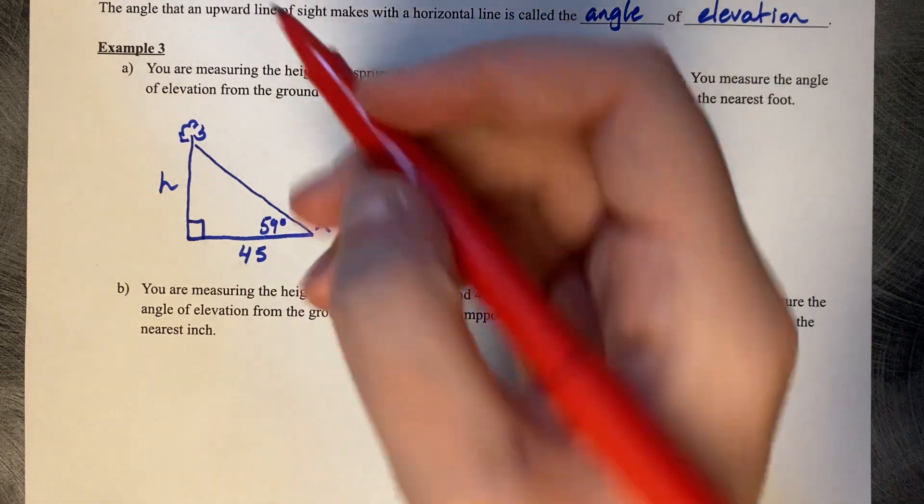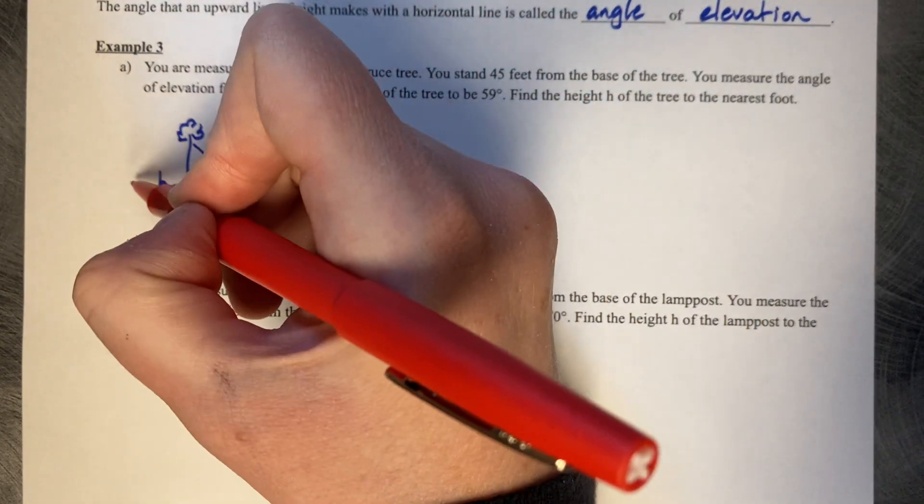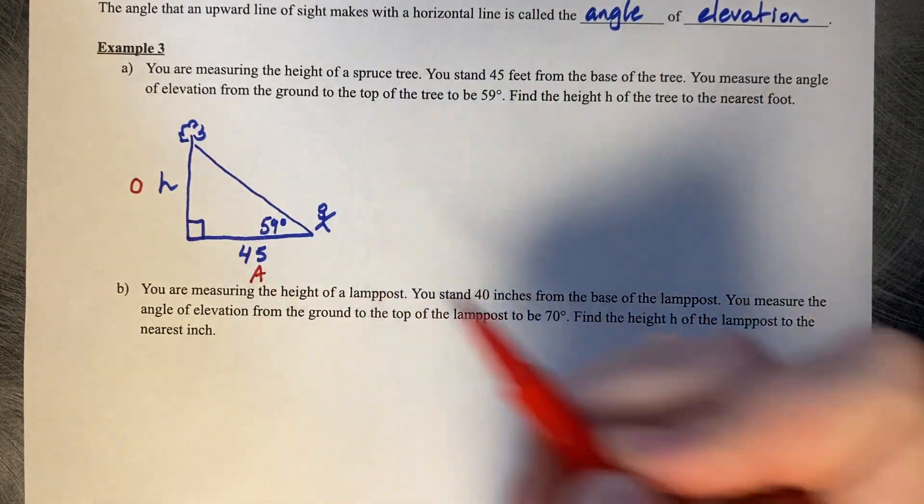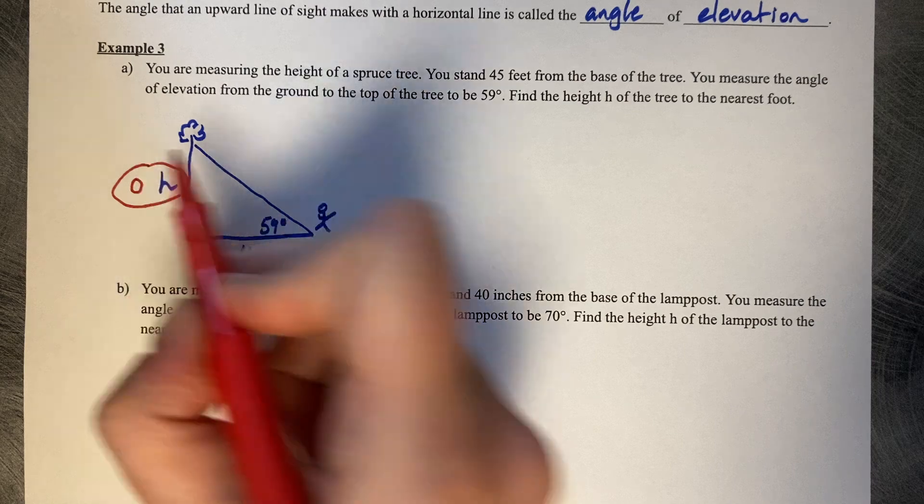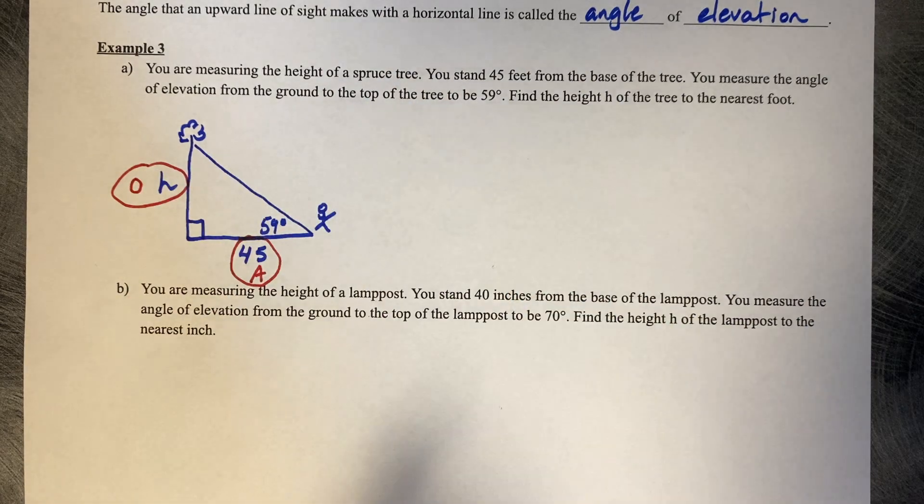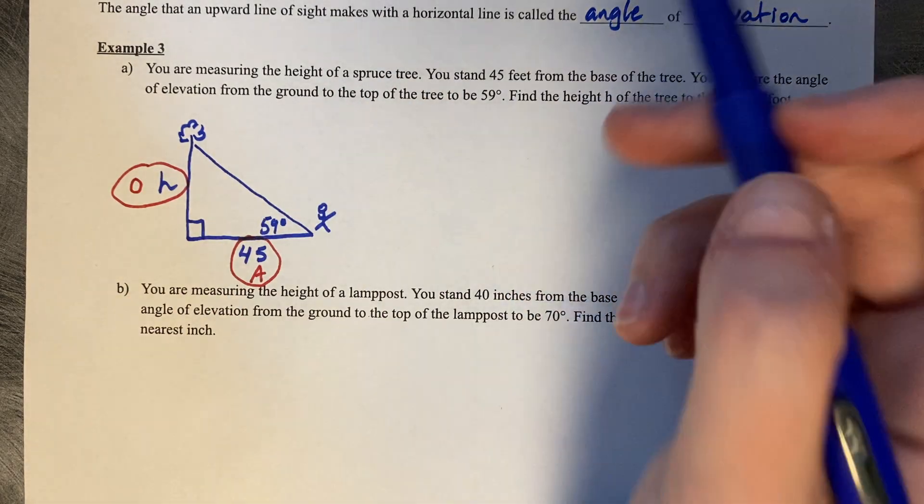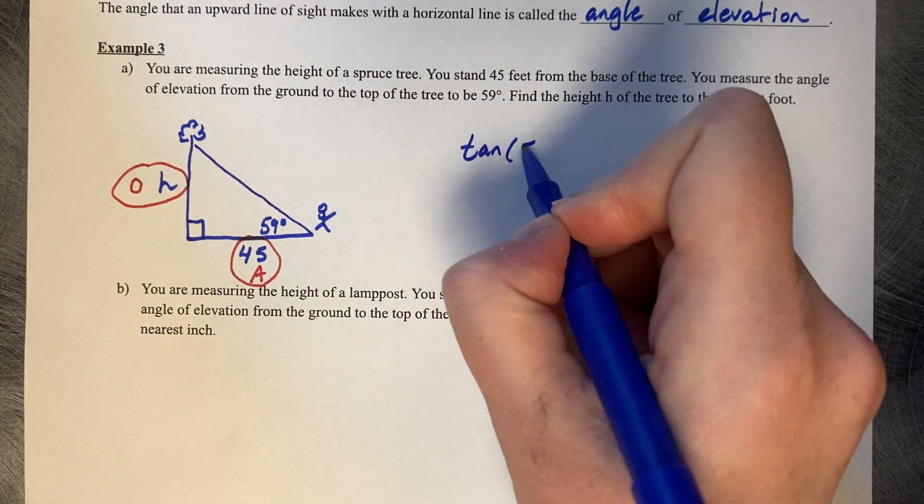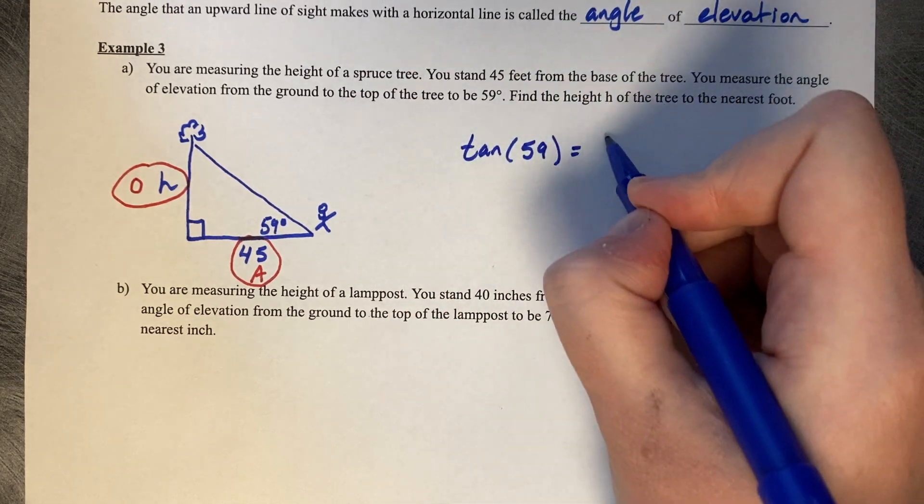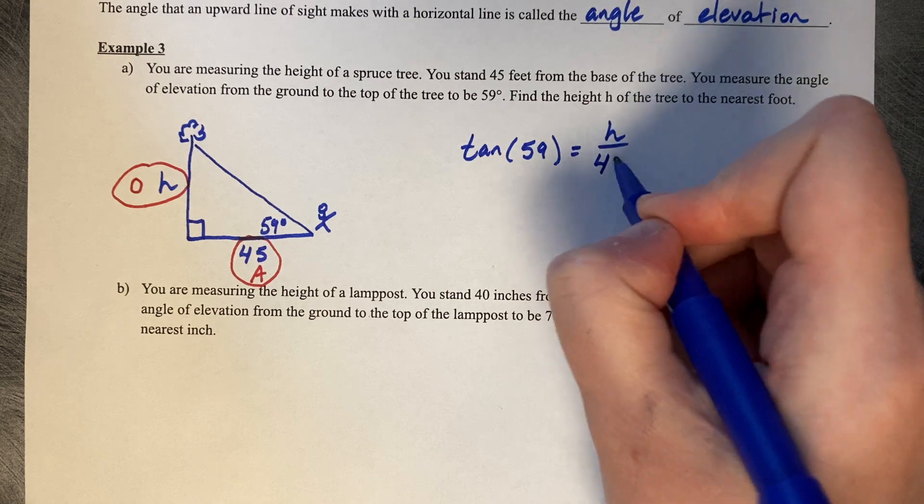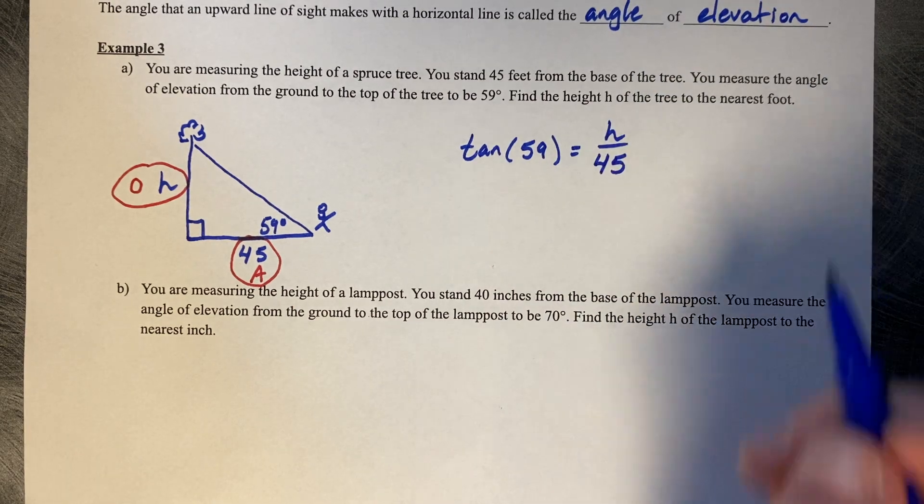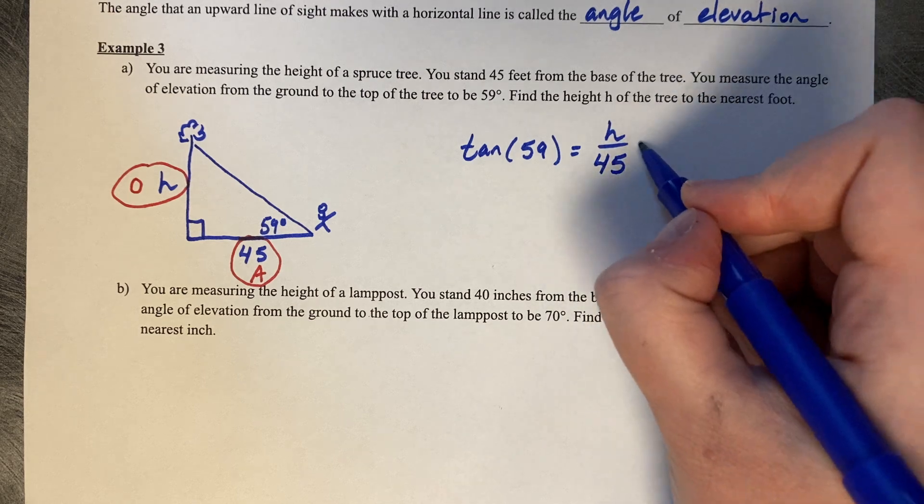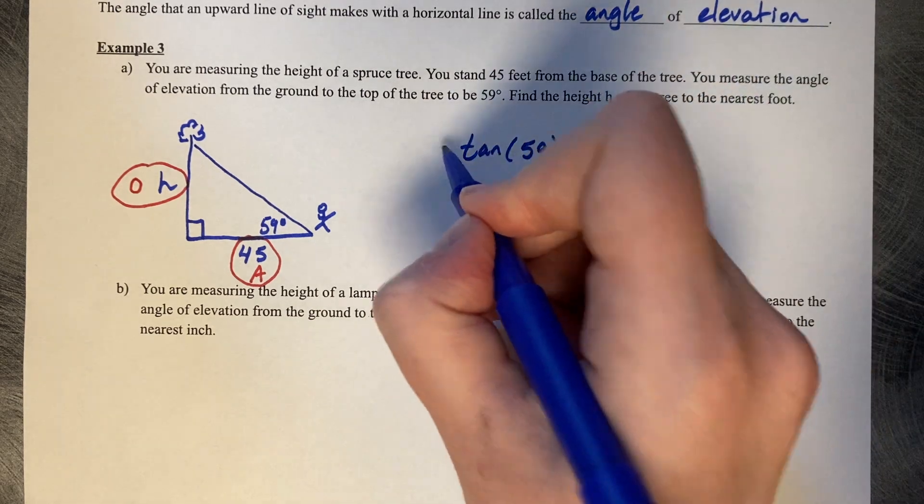Let's think about what side lengths we're working with. From 59 degrees, my h is my opposite, and my 45 is my adjacent. So we're working with an O and an A, which is the tangent ratio. The tangent of 59 equals h over 45. Solving for h, multiply both sides by 45.